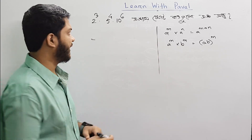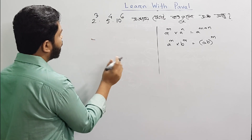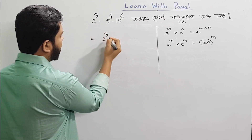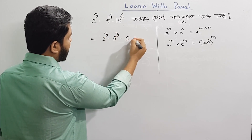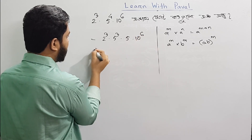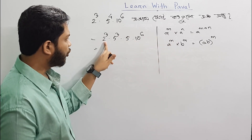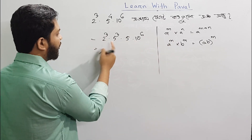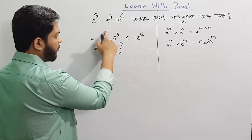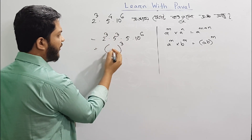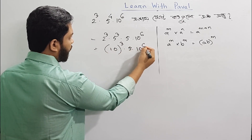So we are going to write 2 cube into 5 cube into 5 into whole cube. I have written using the concept of 2 cube and 5 cube — I have 2 into 5 whole cube, which gives 10 into 5 into 10 divided by 6.